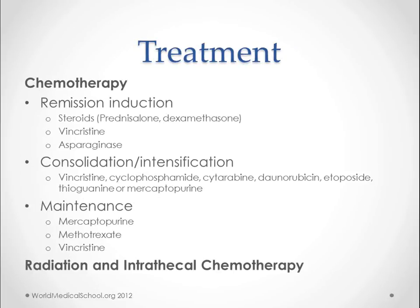Chemotherapy is the major treatment, discussed in three stages. The first is remission induction, where we try to beat down these cells until they are less than 5% of bone marrow cells. We do that with steroids like prednisolone or dexamethasone, vincristine, and asparaginase.